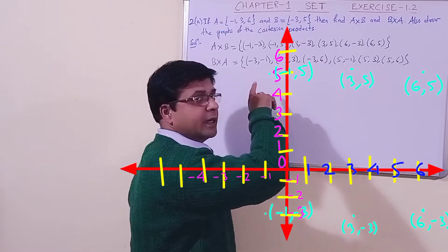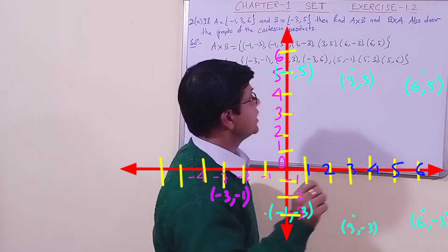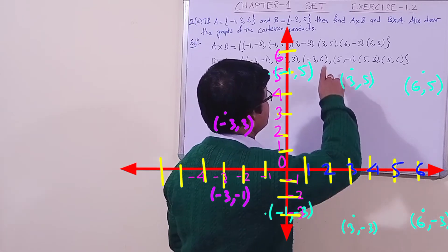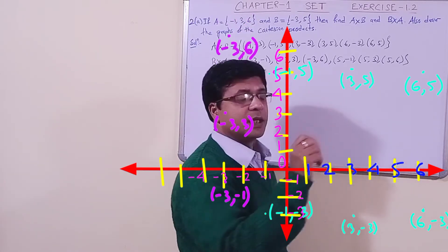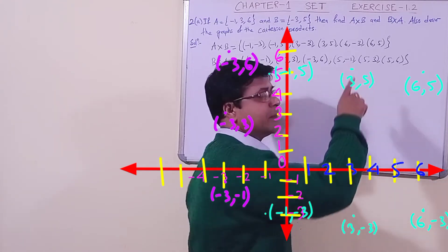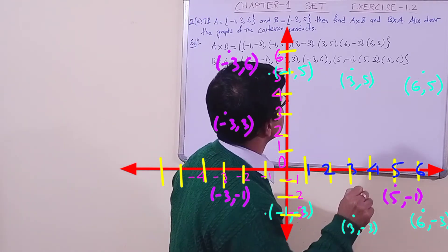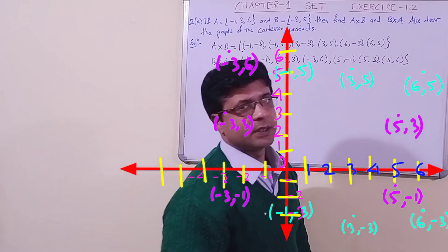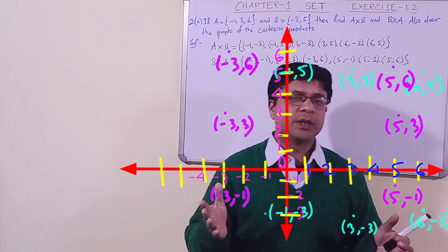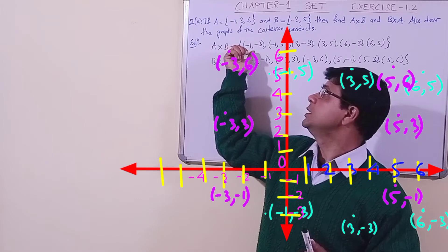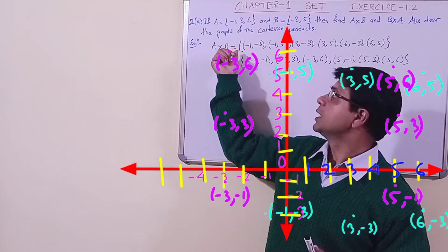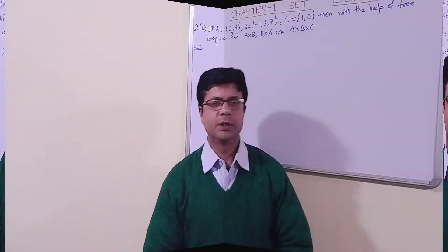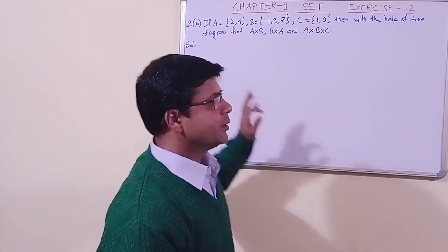Now for B cross A, let us plot (-3, -1) in the third quadrant, then (-3, 3) in the second quadrant, then (-3, 6) in the second quadrant. Then (5, -1) in the fourth quadrant, (5, 3) in the first quadrant, then (5, 6). Each ordered pair is a point where the first element is the x-coordinate and the second is the y-coordinate. Now we move to question number 2b.